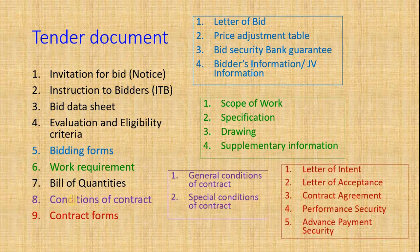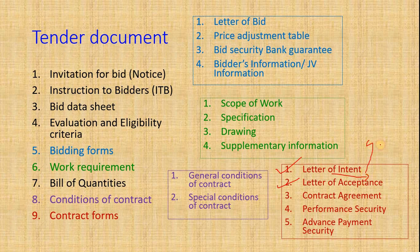Contract Forms are also attached in the Standard Bidding Document (SPD). The first is the Letter of Intent, which is issued to all bidders who have successfully passed the eligibility criteria. After seven days, the Letter of Acceptance is issued. The Letter of Intent is issued to all, but only the name of the successful bidder is mentioned. The Letter of Acceptance is given only to the successful bidder.